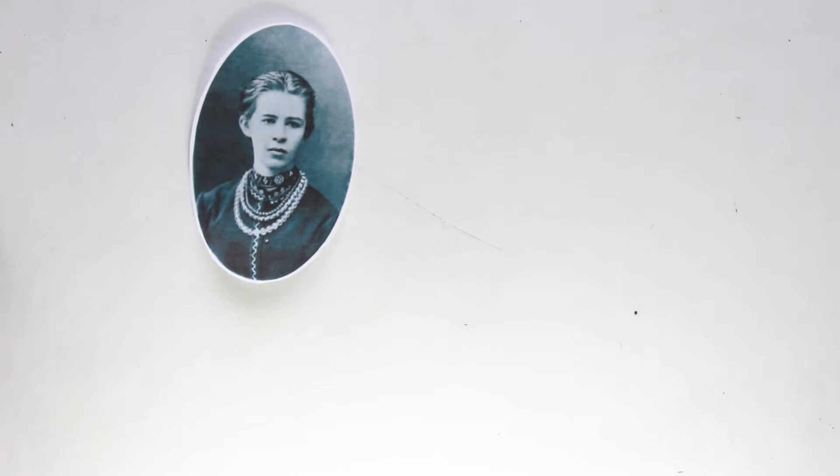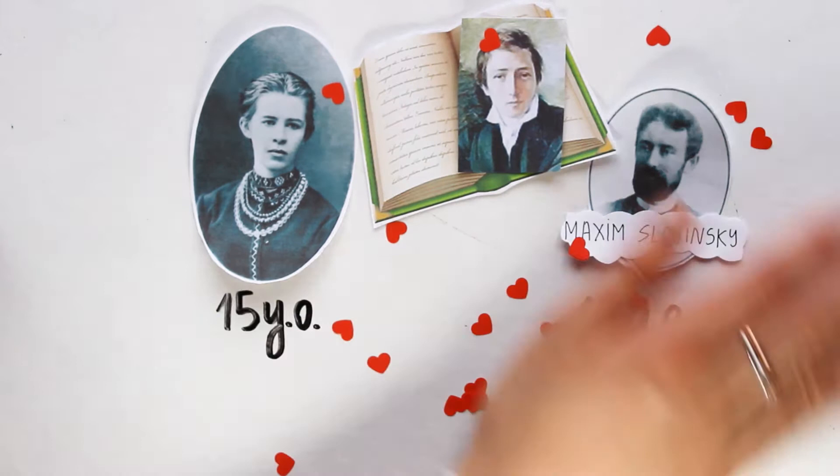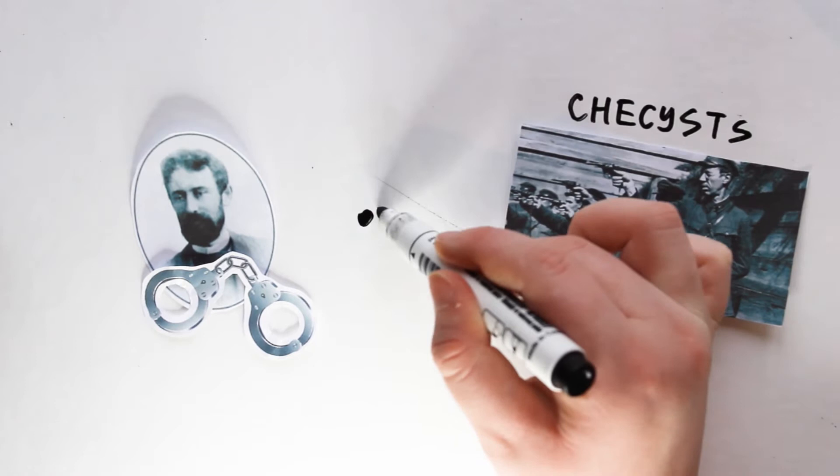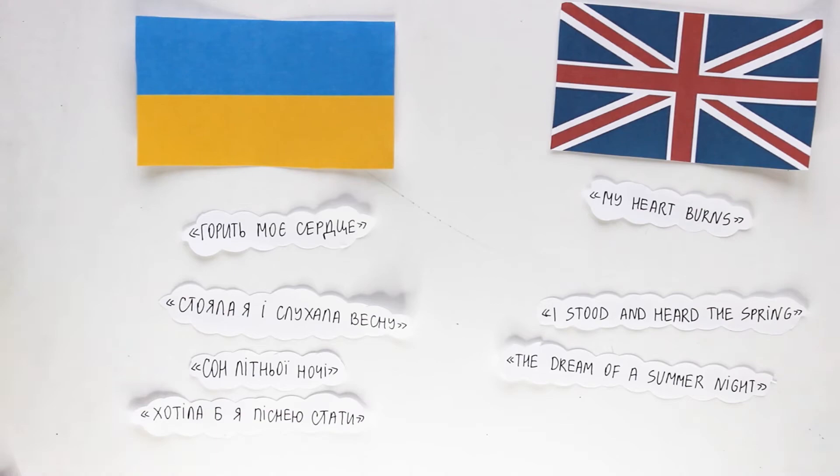The girl met her first love being very young. Lesya was fifteen and Maxim Slavinsky was eighteen when they translated Heine together. Later, he died in prison, tortured by Chekists. Lesya dedicated several poems to him: My Heart Burns, I Stood and Heard the Spring, The Dream of a Summer Night, I Would Like to Become a Son are among them.